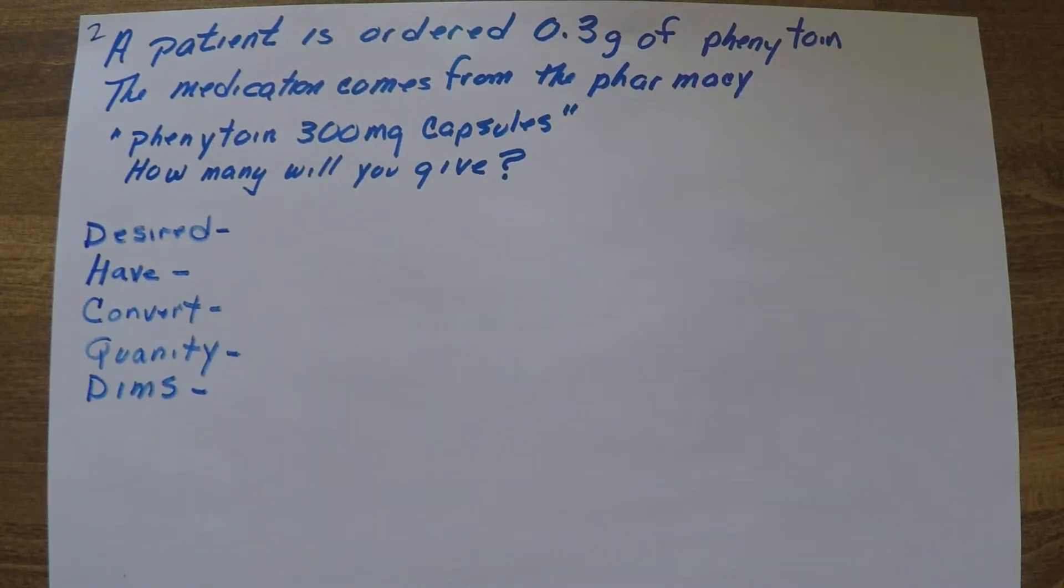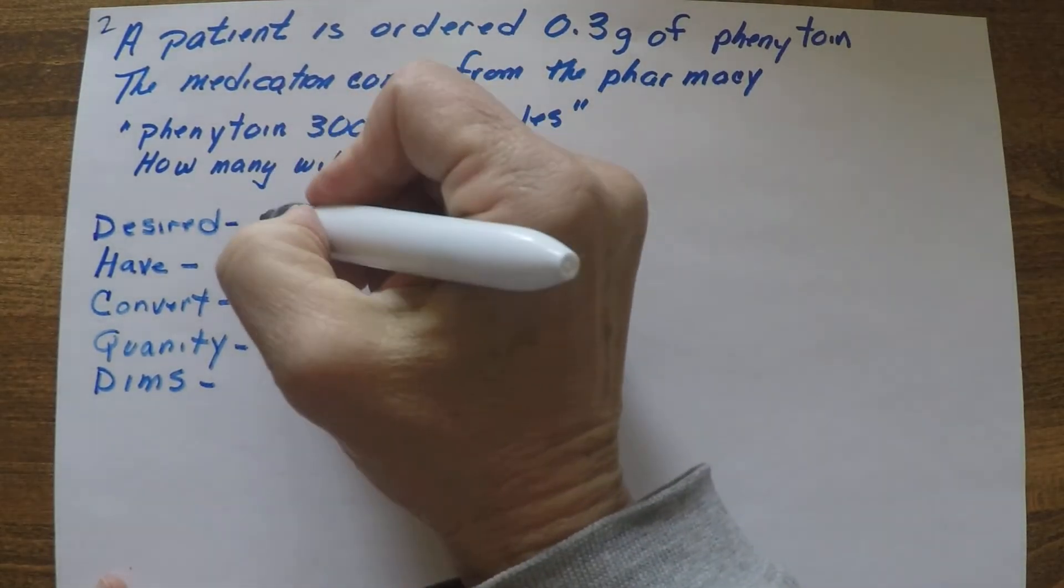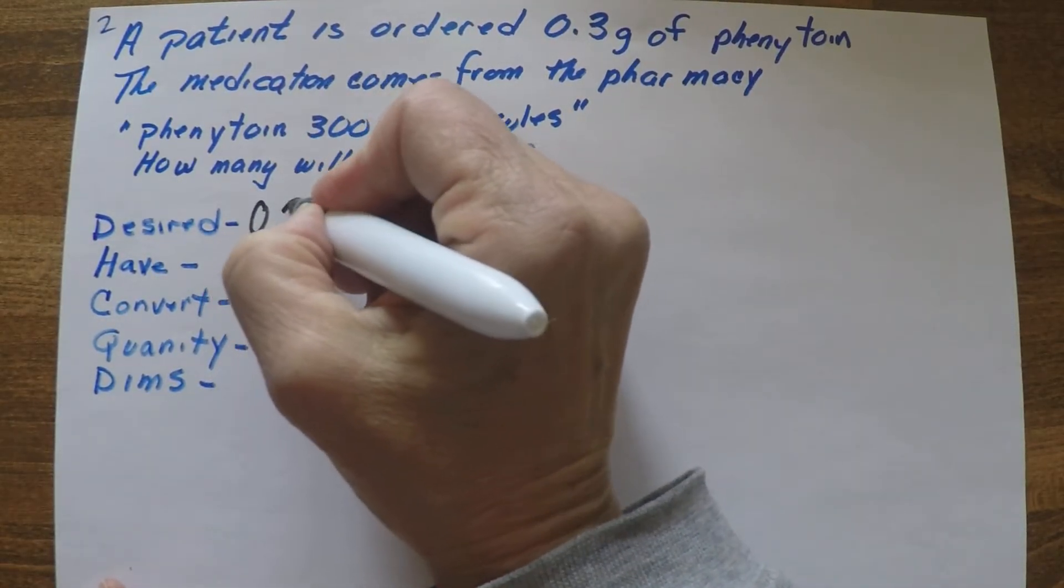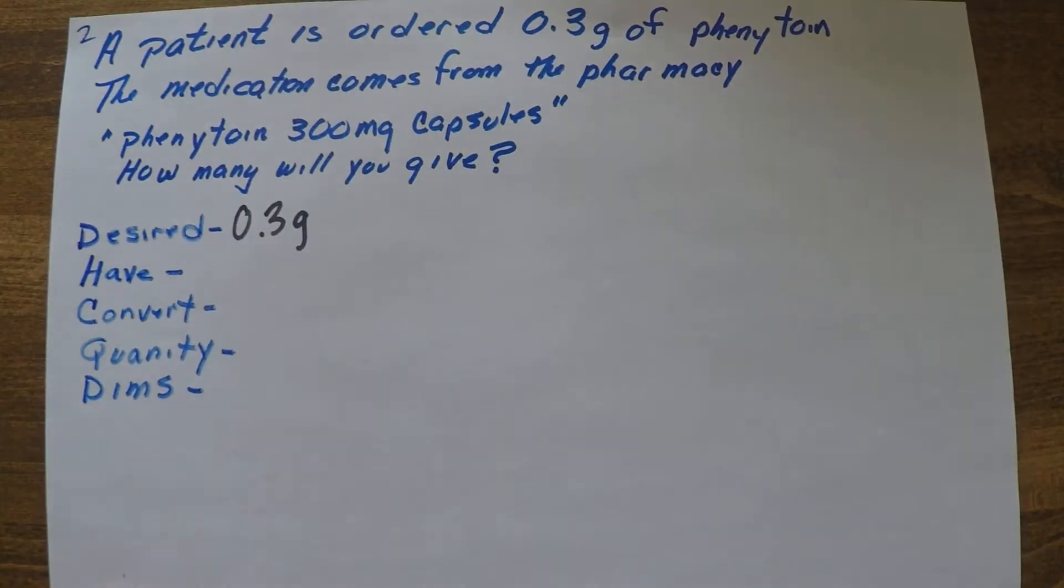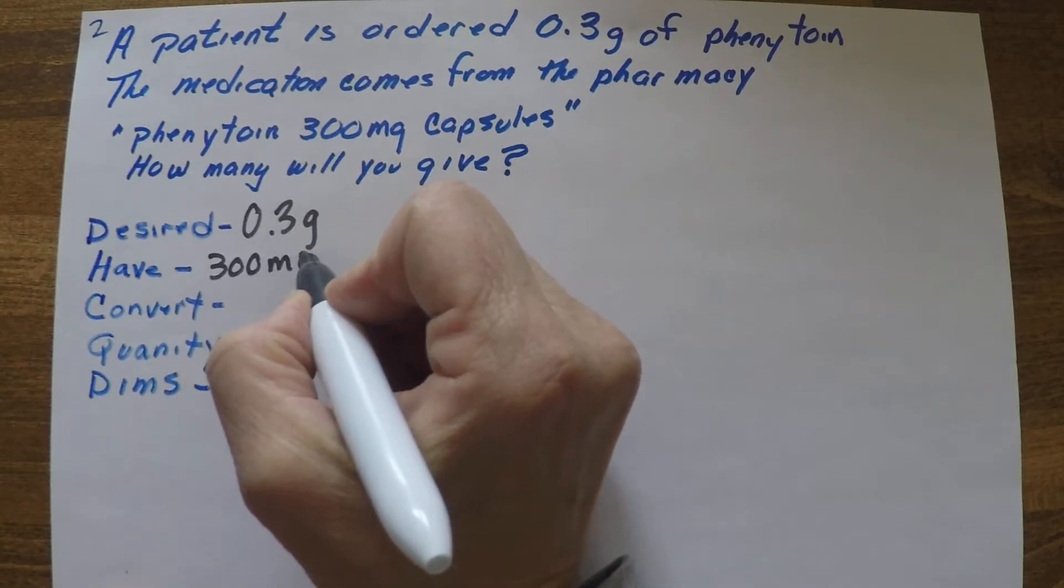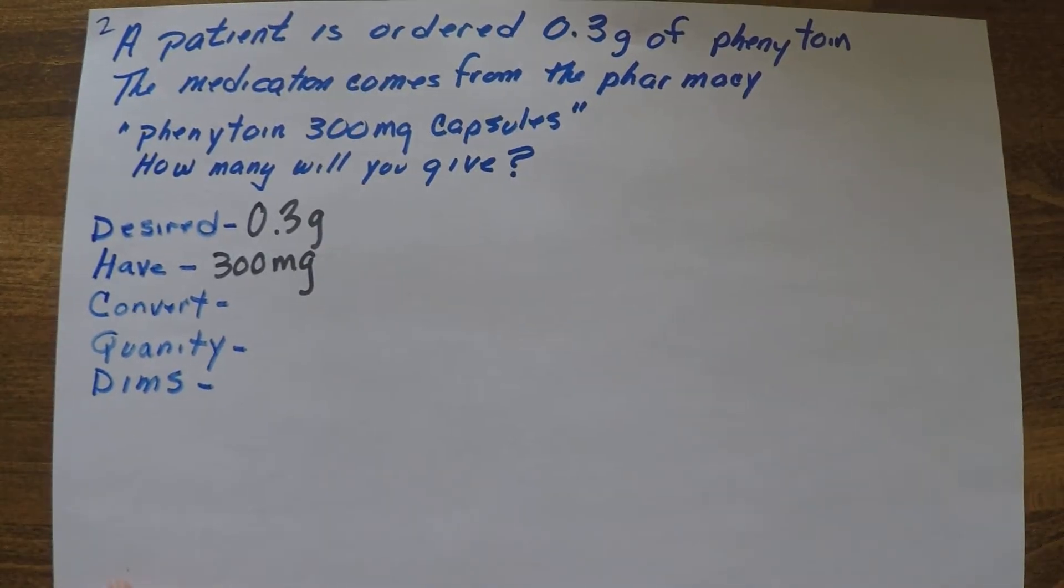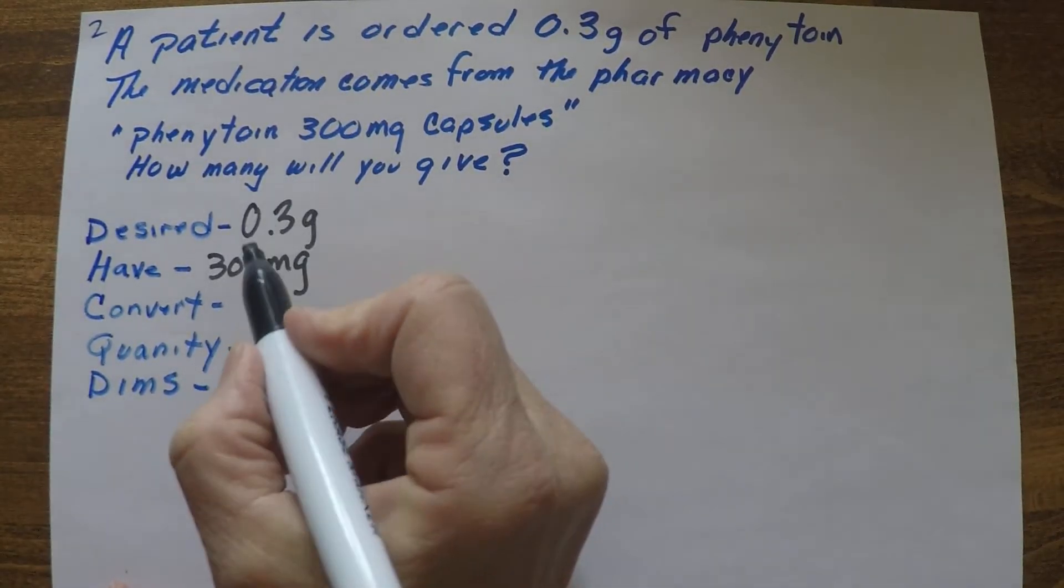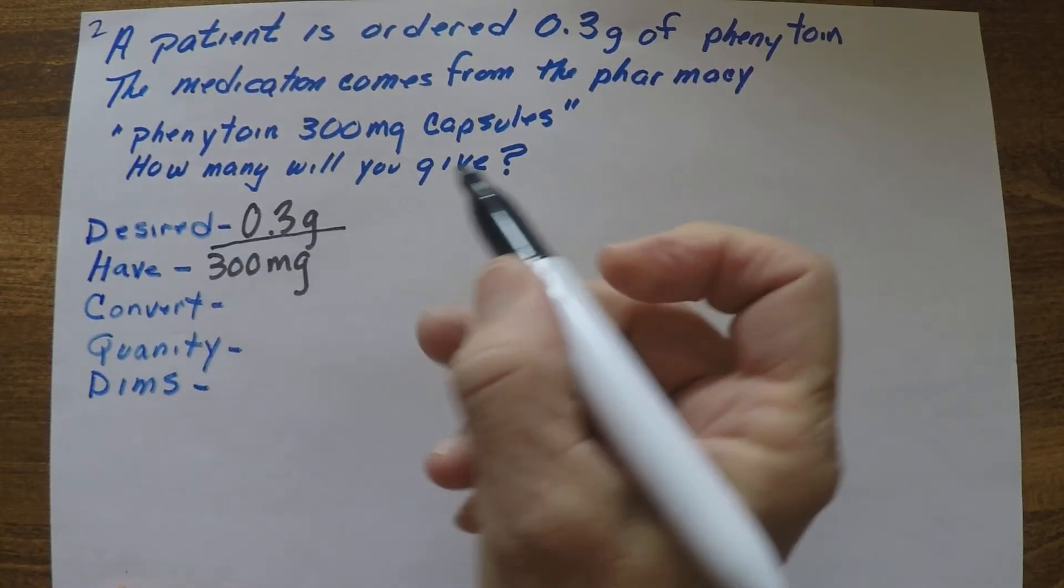So here we go with another. We have a patient's ordered 0.3 grams of phenytoin - remember phenytoin is a seizure med. The medication comes from the pharmacy; it says phenytoin 300 milligram capsules. How many will you give? So our desired dose is 0.3 grams. We have our packaging says 300 milligrams. Do we need to convert? Yes.